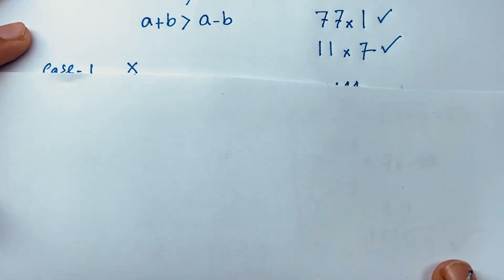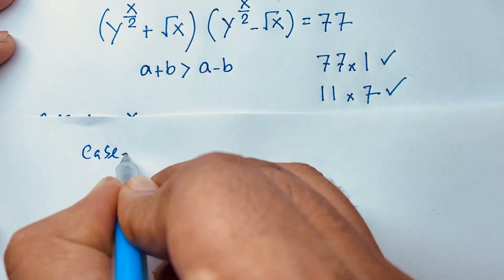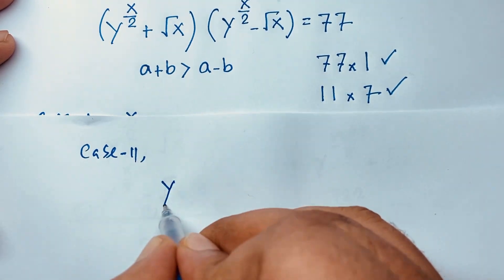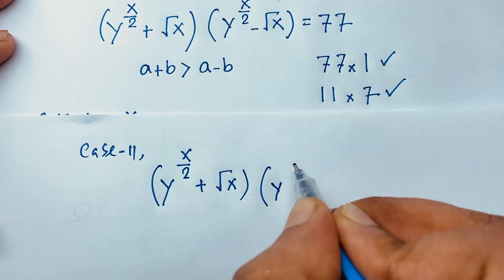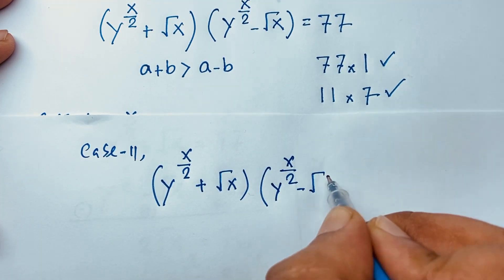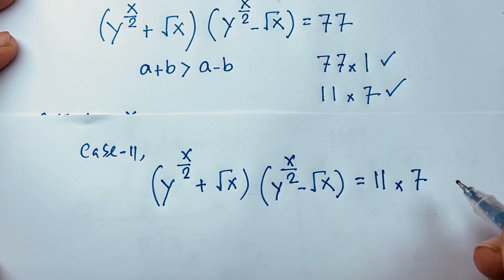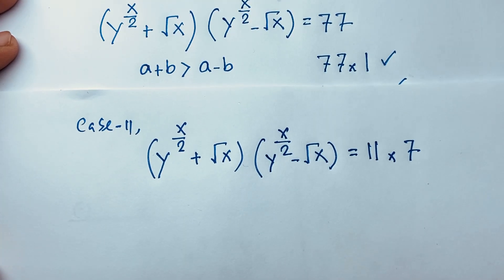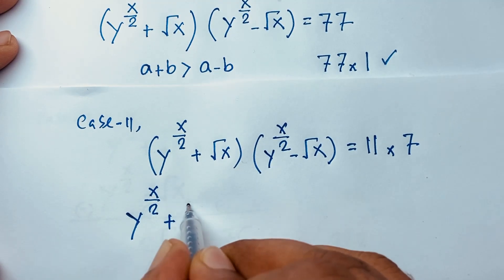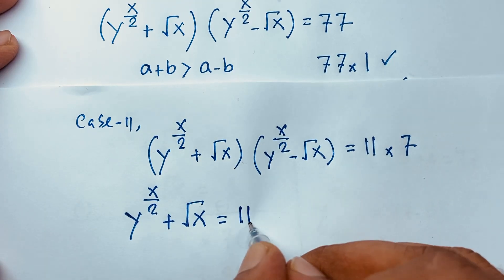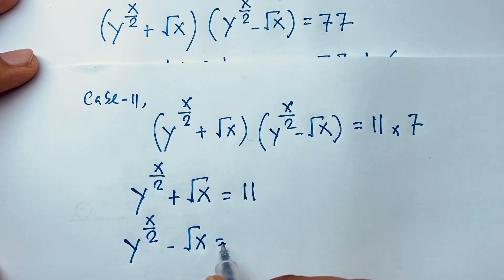For Case 2: y to the power x over 2 plus square root x, times y to the power x over 2 minus square root x, equals 11 times 7. So we set y to the power x over 2 plus square root x equal to 11, and y to the power x over 2 minus square root x equal to 7.